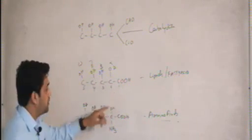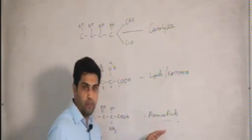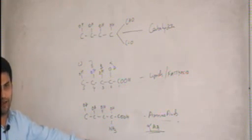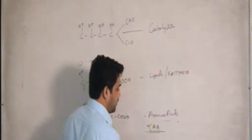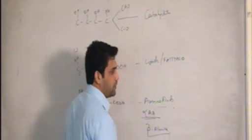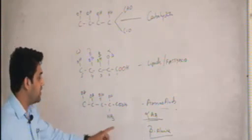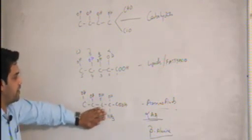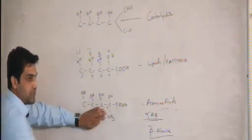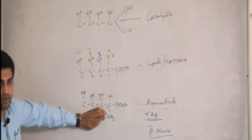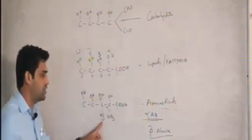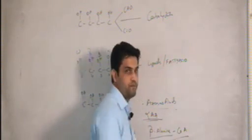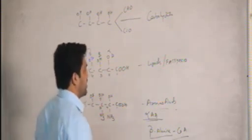Always remember: all naturally occurring amino acids are alpha amino acids — the amino group is on the alpha carbon — except for one: beta-alanine. Beta-alanine is the only amino acid where the amino group is present on the beta carbon. We come across beta-alanine as a part of coenzyme A.